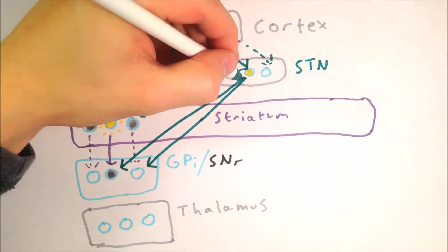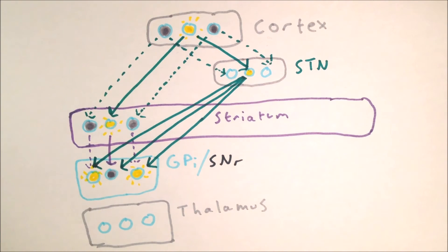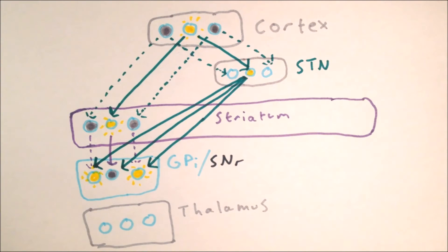The subthalamic nucleus then projects diffusely to all the output nuclei. Again, as the middle loop has the strongest activation, it is also able to excite the output nuclei of the competing loops most strongly.